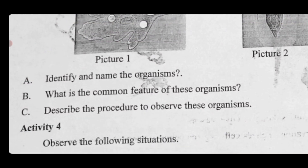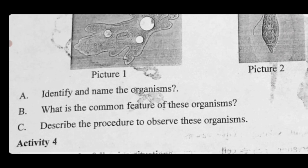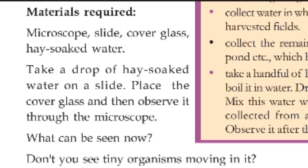Describe the procedure to observe these organisms. Materials required: microscope, slide, cover glass, and hay-soaked water. Take a drop of hay-soaked water on a slide, place the cover glass, and then observe it through the microscope. That is the procedure — you can then see the microscopic unicellular organisms.